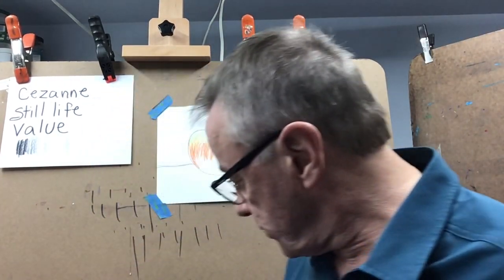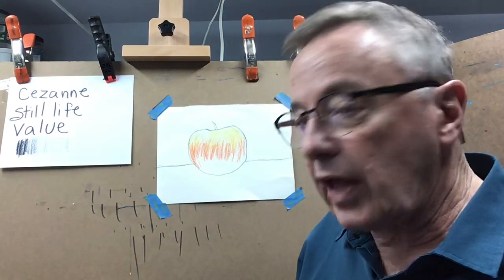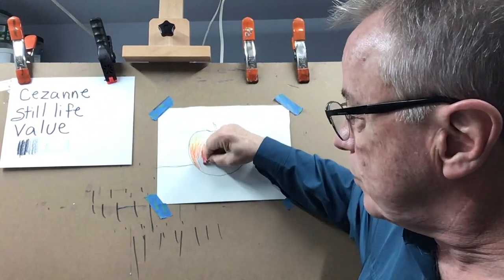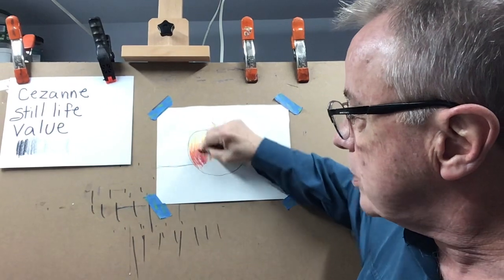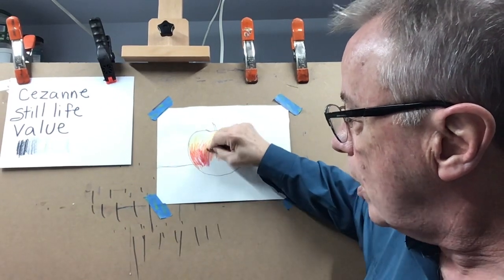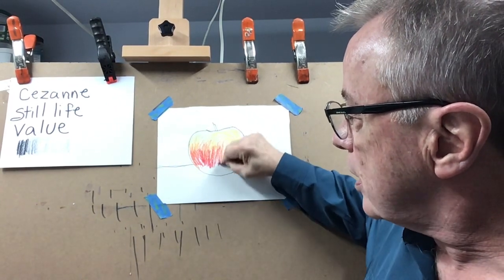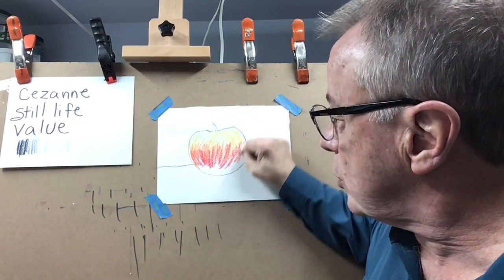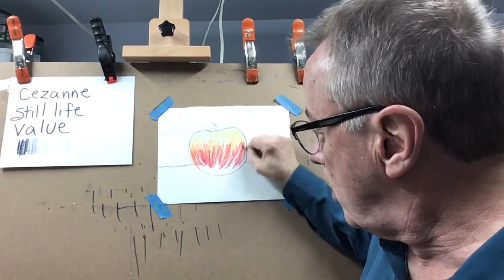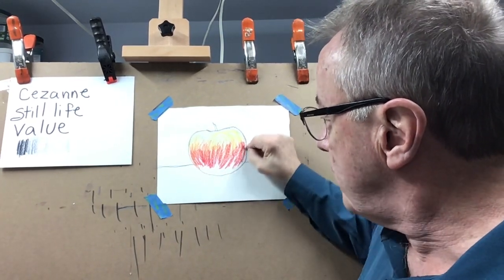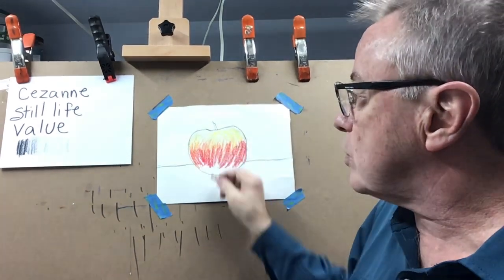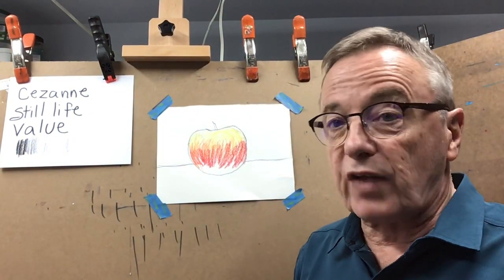Now I'm going to go with a red, because that's the color that the apple generally is. But nothing — we've talked about this before — nothing is really just one color. Also, you notice that I'm coloring with curves. I want to show the curve of the apple, so when I make my marks I make them curved. Because if I just go straight across, it's going to make the apple look like it's flat.